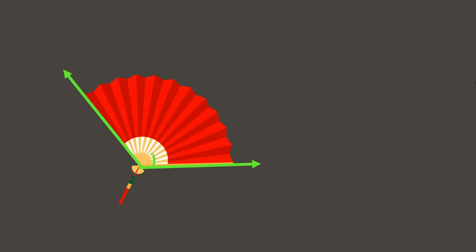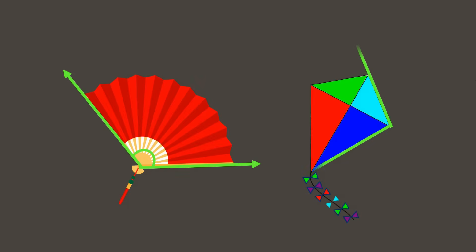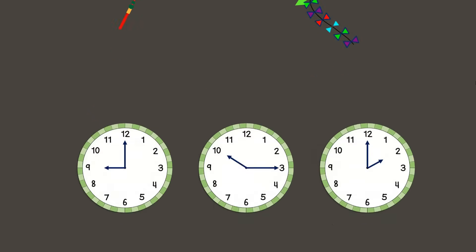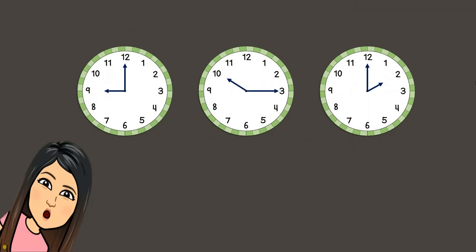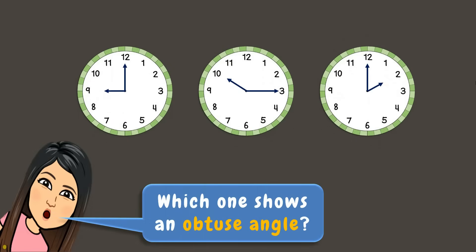Here are some objects that show an obtuse angle. Now let's go back to our clocks — which one shows an obtuse angle? If your answer is the second clock, that is correct. The 10:15 clock shows an obtuse angle.